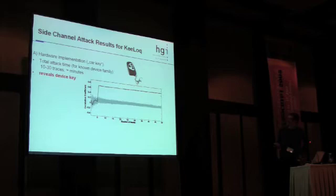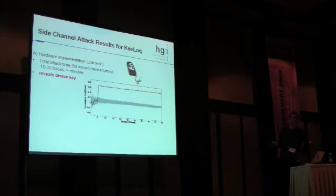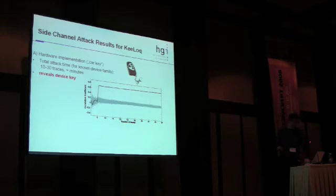So what are the results? If you give us a car key, it takes us between 10 and 30 measurements — 10 to 30 traces — to get the device key out. This is an actual curve here. We actually got away with just six measurements to compute the device key.